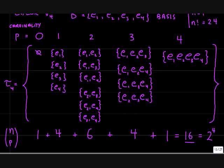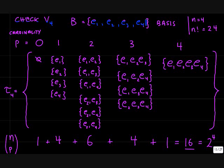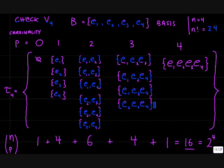Let's check this out for a case. I think it helps to make this table. So we're going to look at the linear space V4 with the basis B of four basis vectors. Let's look at the combinations we can construct from these four elements. Taking 0 at a time, you get the empty set. 1 at a time, you get the individual basis vectors. 2 at a time, you get these six distinct pairs of basis vectors. 3 at a time, there are four distinct subsets. And finally, there's only one instance of the entire set of basis vectors.